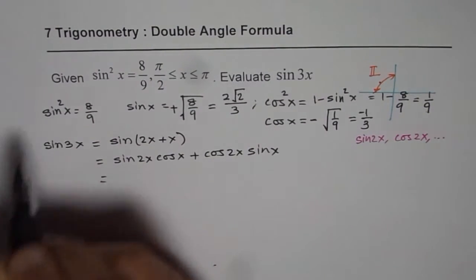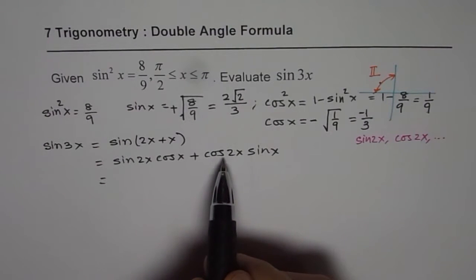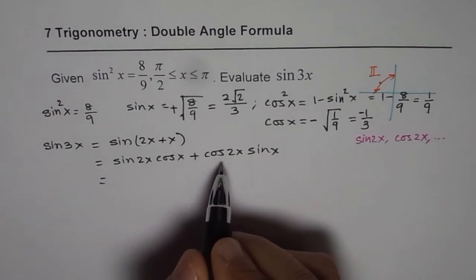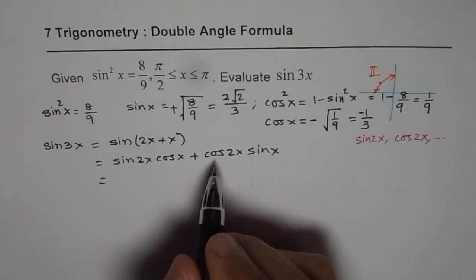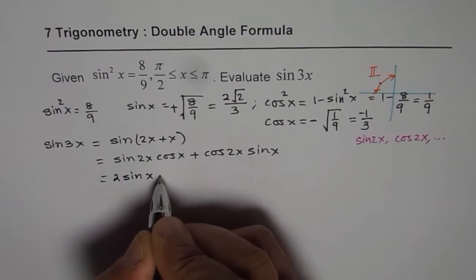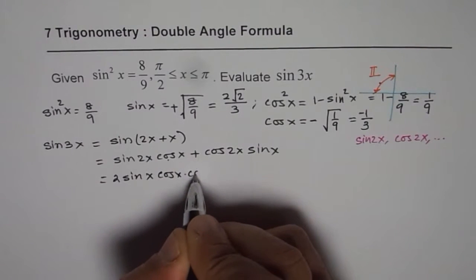Now, since we are given sin²x, it is a good idea to write cos 2x in terms of sin²x. So that will really help us to write it in a simpler form. So what we will do here is, we will write sin 2x as 2 sin x cos x. And cos 2x,